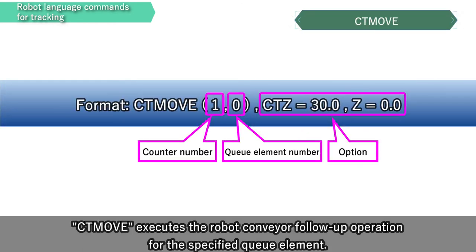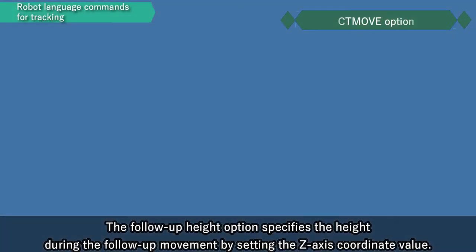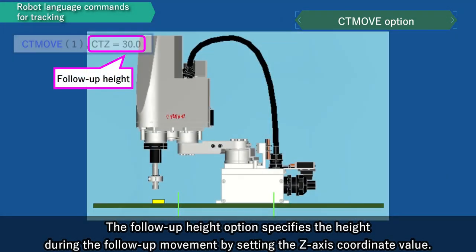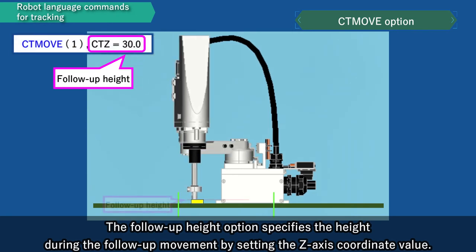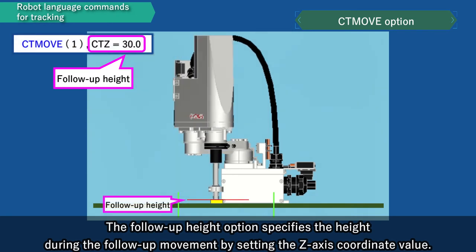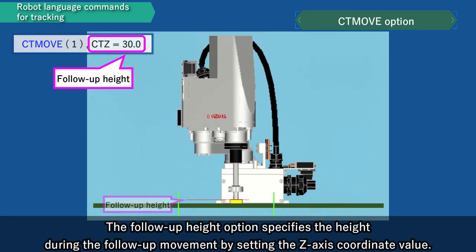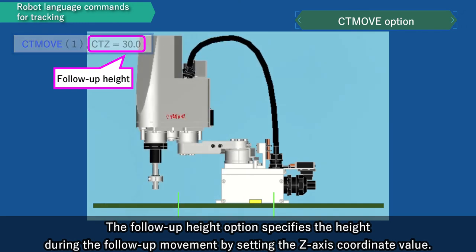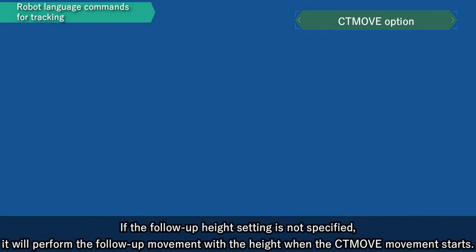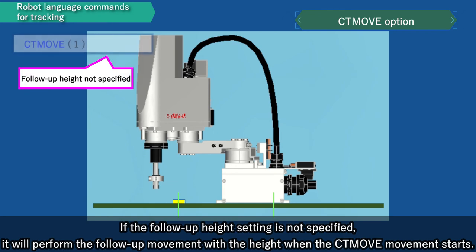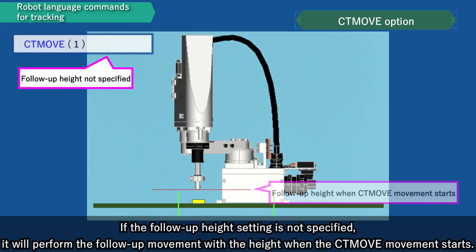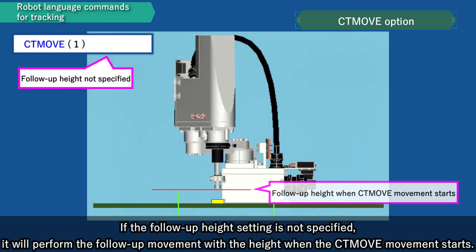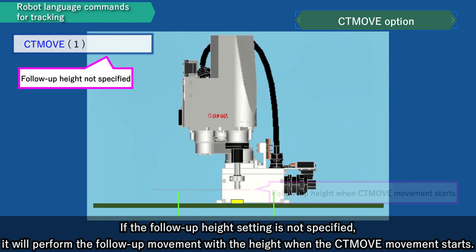CT-move executes the robot conveyor follow-up operation for the specified queue element. The follow-up height option specifies the height during the follow-up movement by setting the z-axis coordinate value. If the follow-up height setting is not specified, it will perform the follow-up movement with the height at which the CT-move movement starts.